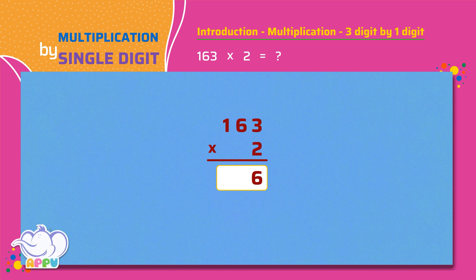Next we multiply the number in the tens place by 2 which is 6 times 2 equals 12. We keep 2 and carry 1. Lastly we multiply the number in the hundreds place by 2 which is 1 times 2 equals 2. Then add the carry to get 2 plus 1 equals 3. So the answer is 326.